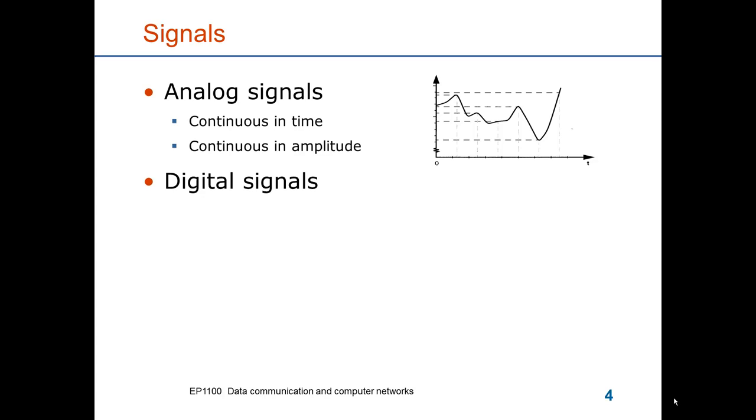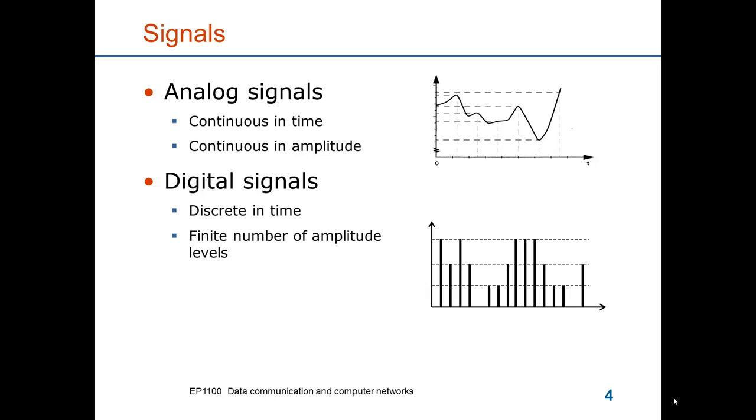Digital signals on the other side are discrete in time, so they only exist at certain points in time. And at the points where they exist, they only take one out of a limited set of amplitude levels. If you look on the right, you see that the signal can take four amplitude levels: the 0th and 1st, 2nd and 3rd level.